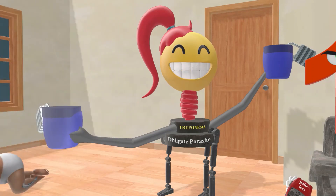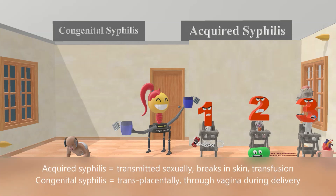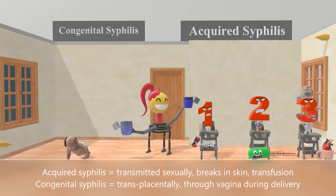Now let's talk about acquired and congenital syphilis. Acquired syphilis can be transmitted sexually, through breaks in the skin, or during a blood transfusion. Congenital syphilis can be acquired through the placenta or while a baby is being passed through the vagina during delivery. Let's begin with acquired syphilis.